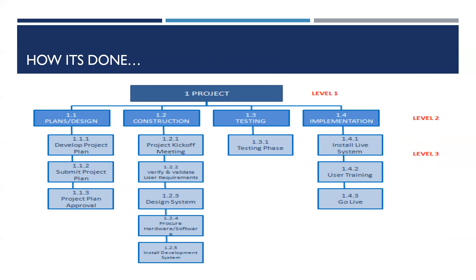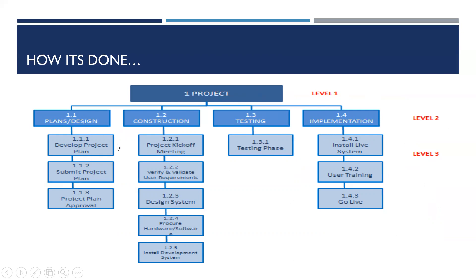This is a sample of a three-level project. Level one is the overall project name — your overall deliverable. Level two represents the phases. Level three represents the sub-phases. Each sub-deliverable at level three is a deliverable for that phase. I'll provide you a copy of this example.